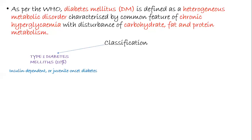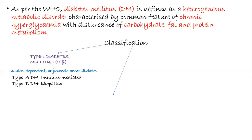Type 1 diabetes mellitus is classified as type 1A, which is immune-mediated: autoantibodies are formed against the beta cells, causing their destruction and ultimately decreasing insulin production. Type 1B diabetes mellitus is idiopathic — the reason is unknown.